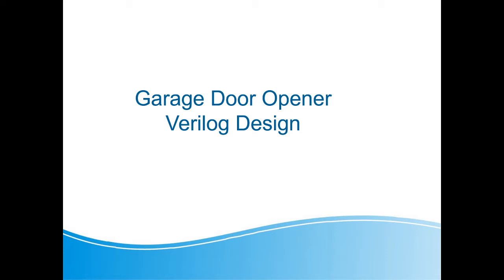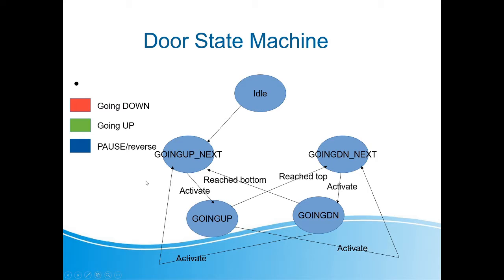Welcome guys, another session on 'Learn Verilog by Examples.' Today the topic is a garage door opener. We are going to build a garage door opener state machine. The simple requirements are that you have to control the garage door motor going up or going down.